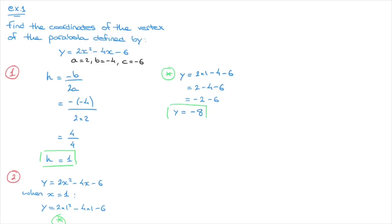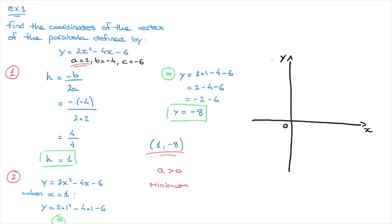Negative 2 minus 6 equals negative 8, so y equals negative 8. That's the y-coordinate of the vertex. We can now state that this parabola's vertex has coordinates 1 and negative 8. We could confirm this by looking at the parabola with a calculator. Because the coefficient a is positive, this vertex corresponds to a minimum, and on an x-y grid the vertex is a minimum point with coordinates 1, negative 8.